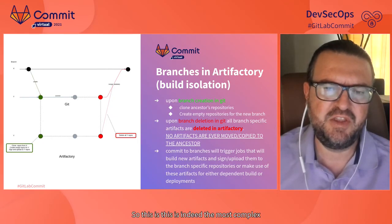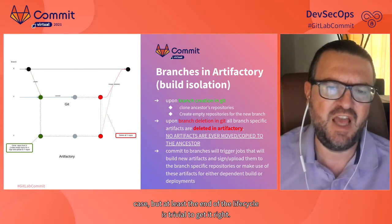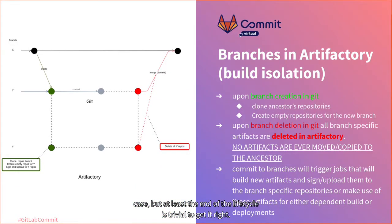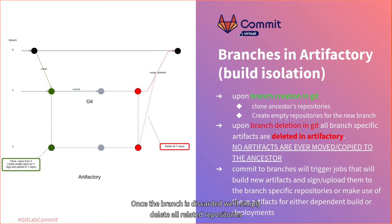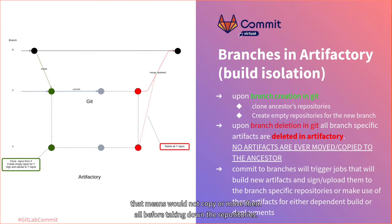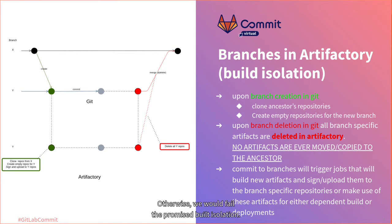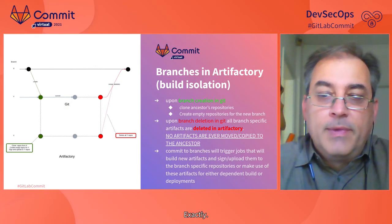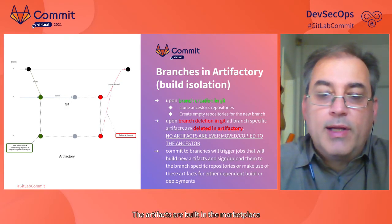The end of the lifecycle is trivial: once the branch is discarded, we simply delete all related repositories — generated artifacts, cloned artifacts, or even cloned dependencies. One important point highlighted in the slide: we never use any artifacts from Y outside of its lifecycle. That means we do not copy or move them out before taking down the repositories, otherwise we would fail the promised build isolation. The artifacts are built in the merge request to branch X anyway, so there is no use for them.